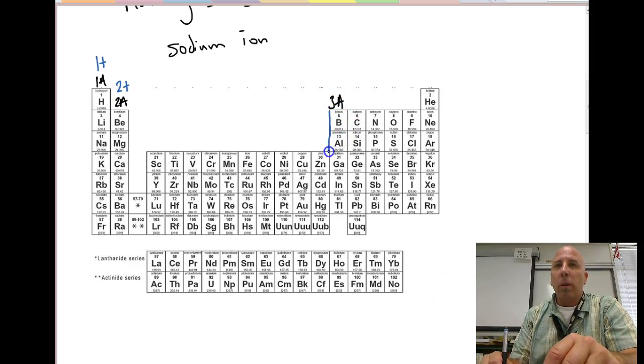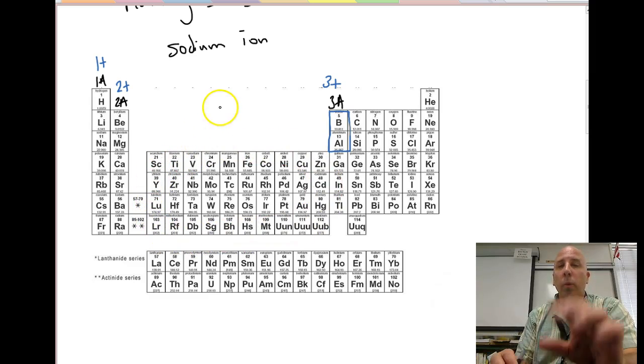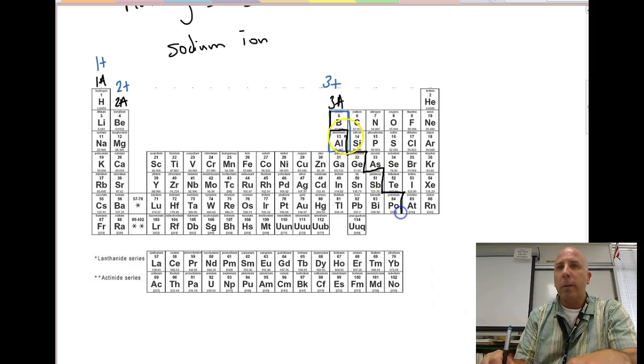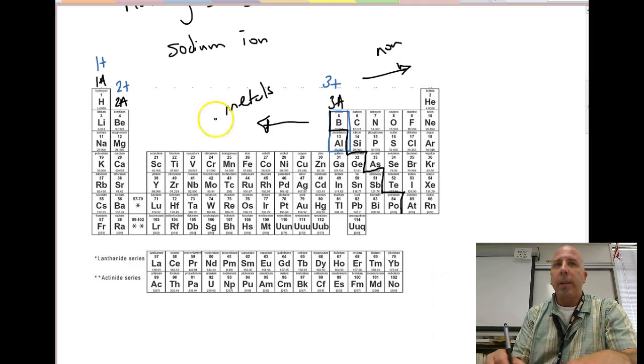Boron and aluminum are going to form 3+ charges. Here in the center of our periodic table, all these guys are our transition metals. We're going to deal with those guys later. We do know that we have a stair-step line here that separates to the left our metals and to the right our non-metals.